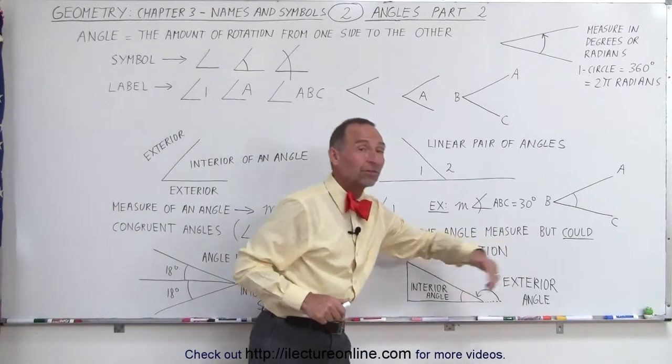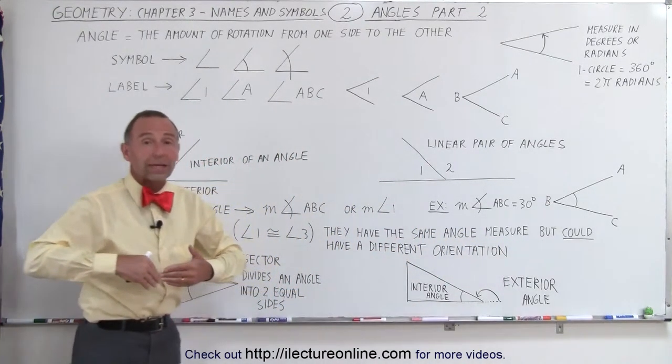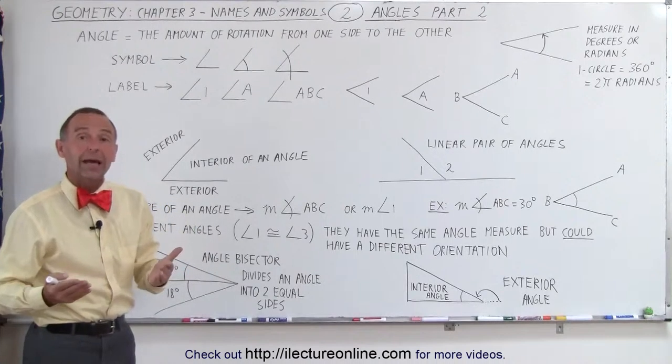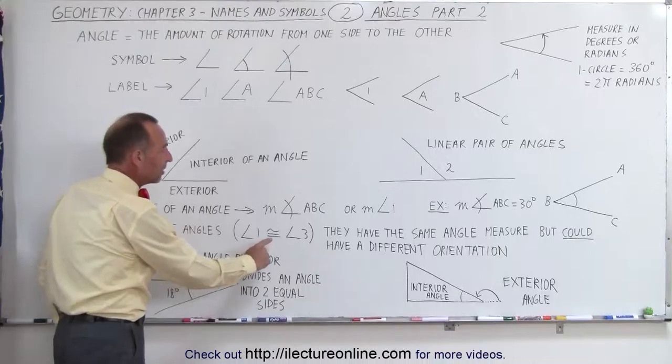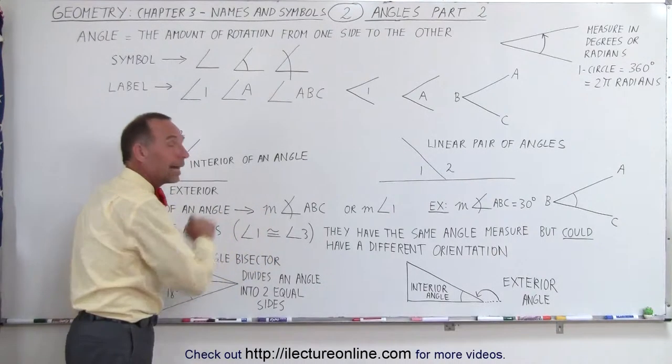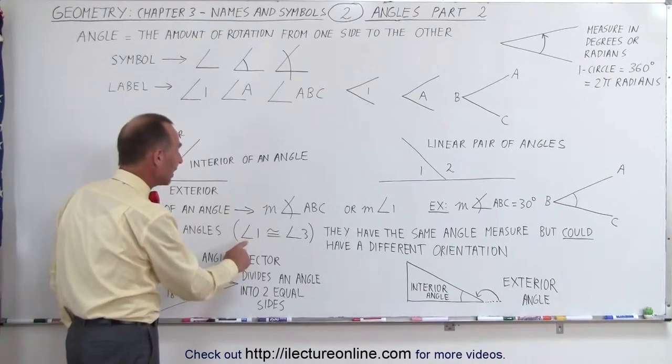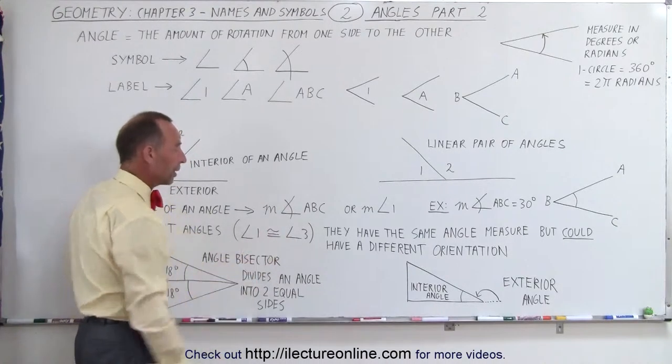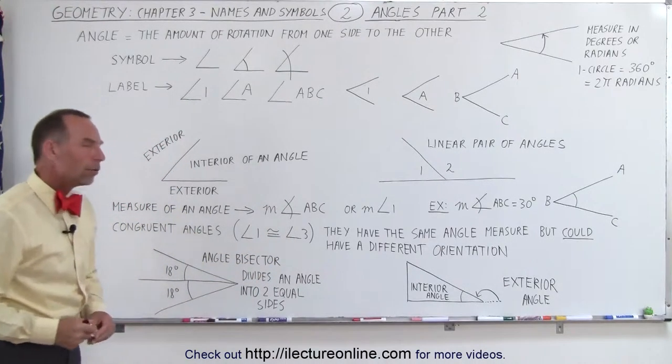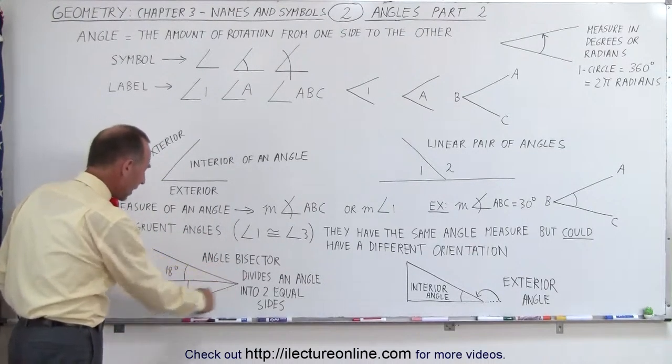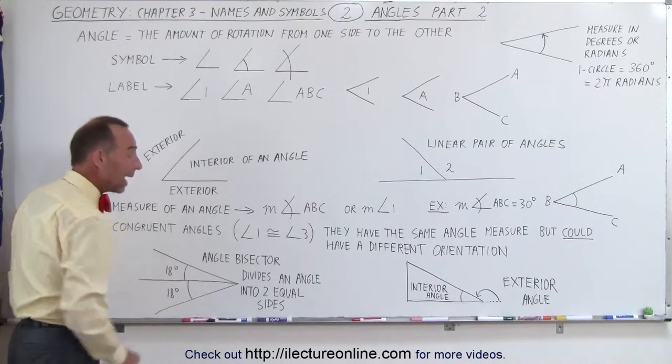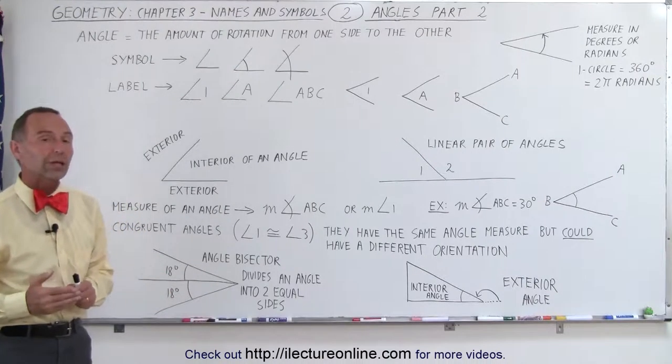So when you hear the word congruent they have the same angle measure but could be oriented differently. The word could is important because that also means that they could be oriented in the exact same way and we still call them congruent. The symbol we use for that is an equal sign with a little squiggly line on top. So here we can say that angle one is congruent to angle three.